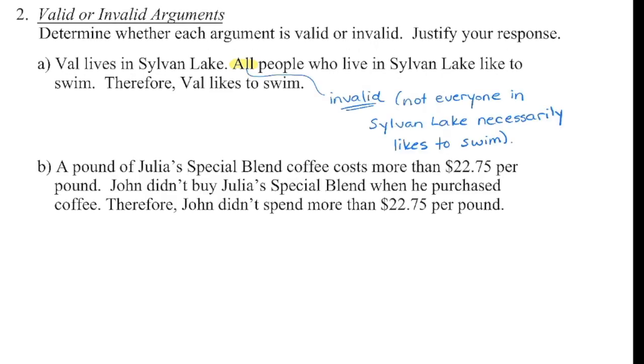What about the second one? A pound of Julia's special blend coffee costs more than $22.75 per pound. John didn't buy Julia's special blend when he purchased coffee. Therefore, John didn't spend more than $22.75 per pound. I also would say that's an invalid conclusion. Just because John didn't buy Julia's special coffee, there are other brands of coffee that could also cost the same amount or more. So it's not necessarily true to say that just because he didn't spend that much, he didn't buy her coffee.